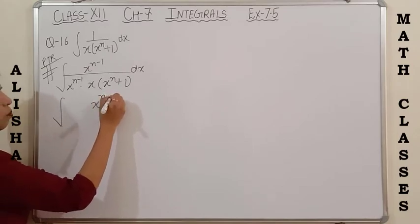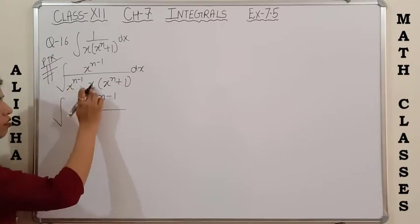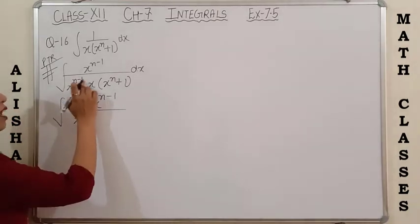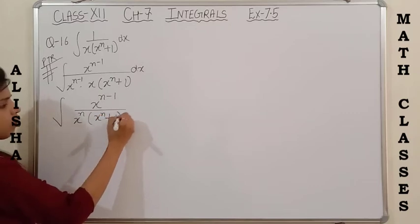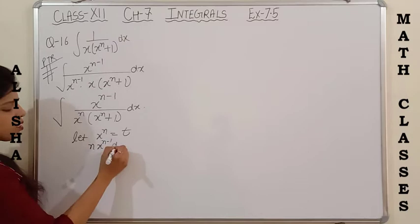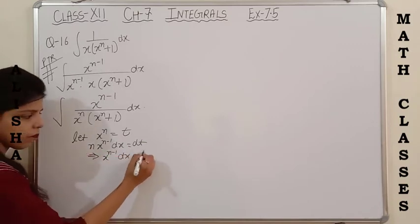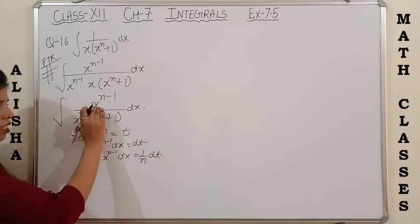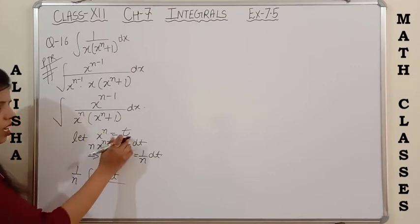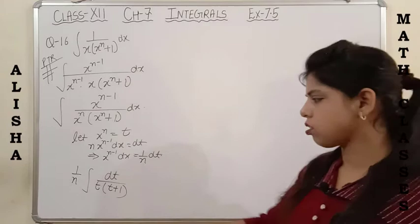After multiplying numerator and denominator by x to the power (n minus 1), the denominator becomes x to the power n times (x to the power n plus 1), since a to the power m times a to the power n equals a to the power (m plus n), so n minus 1 plus 1 gives n. Now put x to the power n equals t; differentiating gives n times x to the power (n minus 1) dx equals dt, so x to the power (n minus 1) dx equals (1 by n) dt. The integral becomes (1 by n) times integration of 1 upon t(t plus 1) dt.